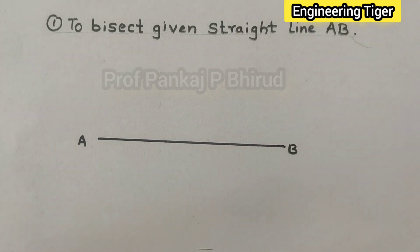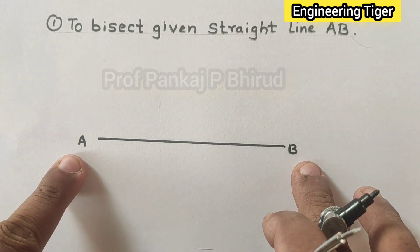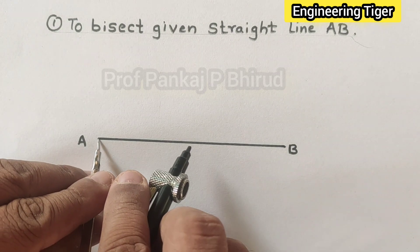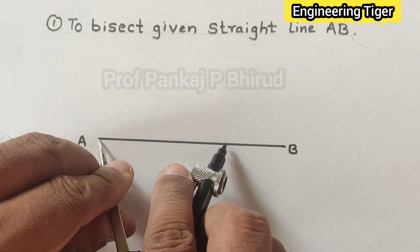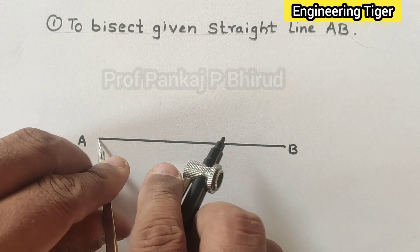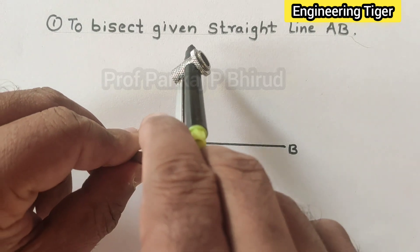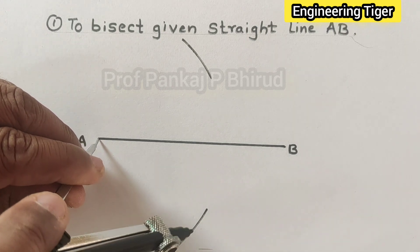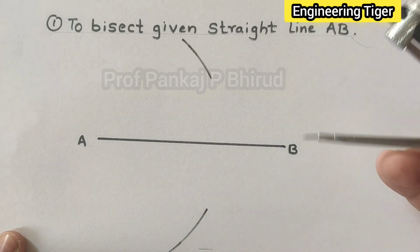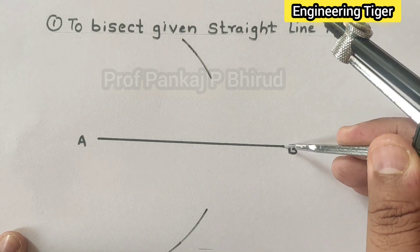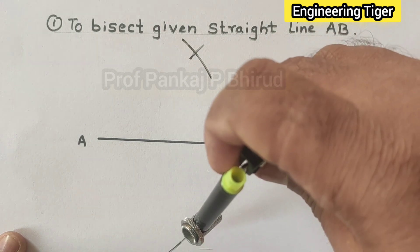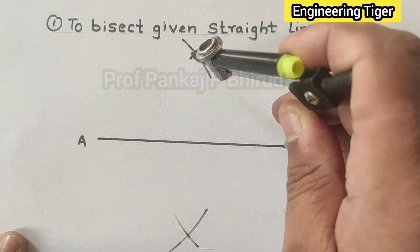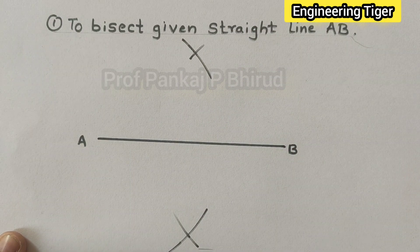Now we have to divide this line into two equal parts. We take a radius greater than half the distance, and on either side we draw arcs. Similarly, from center B, we draw the same radius on both sides, which intersects or cuts the previous arc.